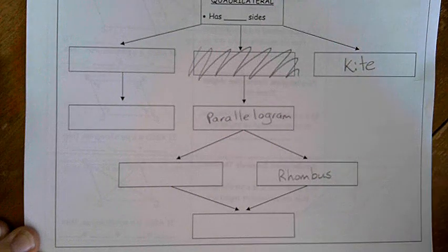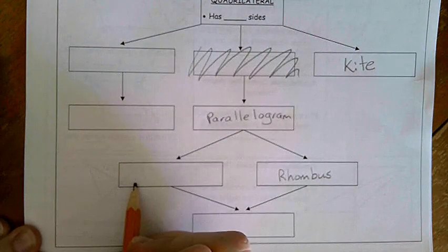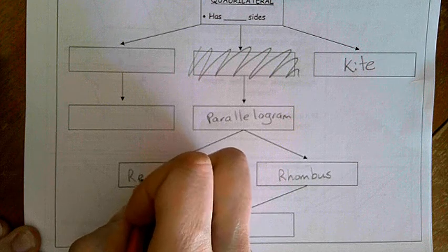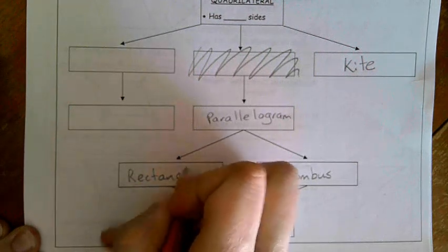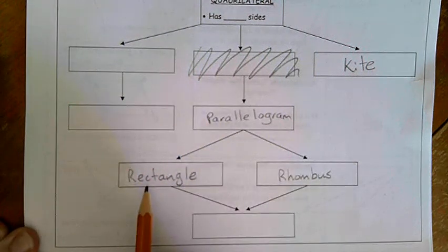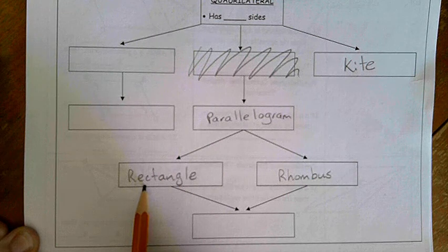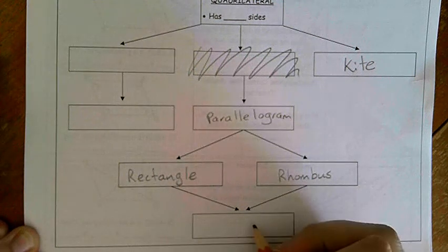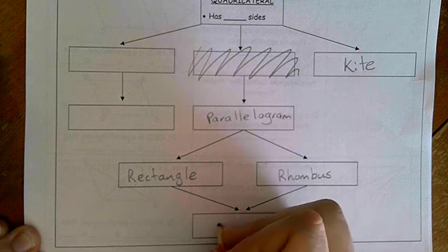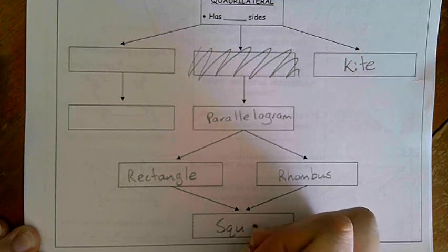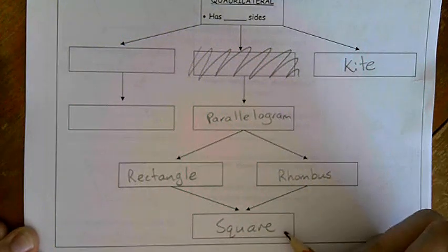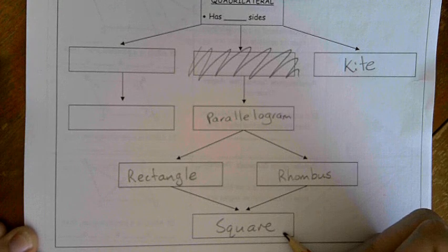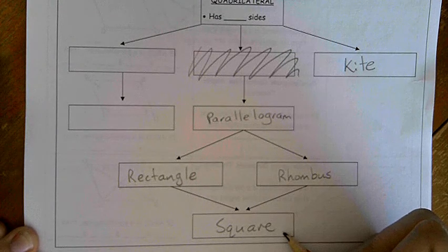It also splits into a rectangle. A rectangle, we know, has opposite sides are congruent and all right angles. And then the last one down here is a square, where all of the sides are congruent to each other and all of the angles are 90-degree angles.